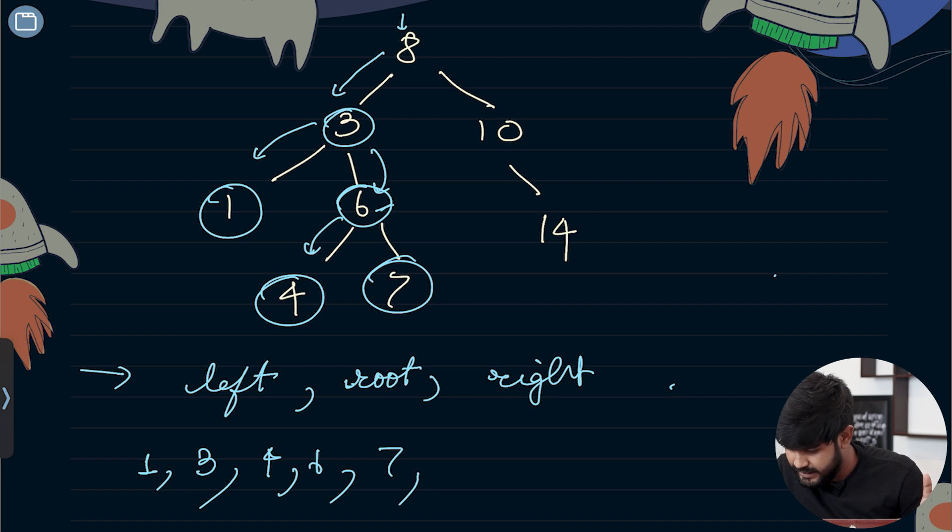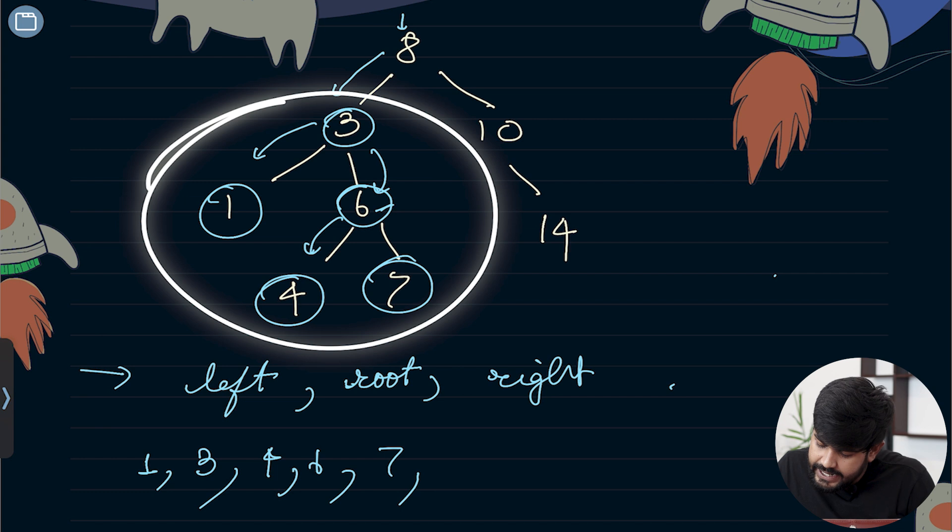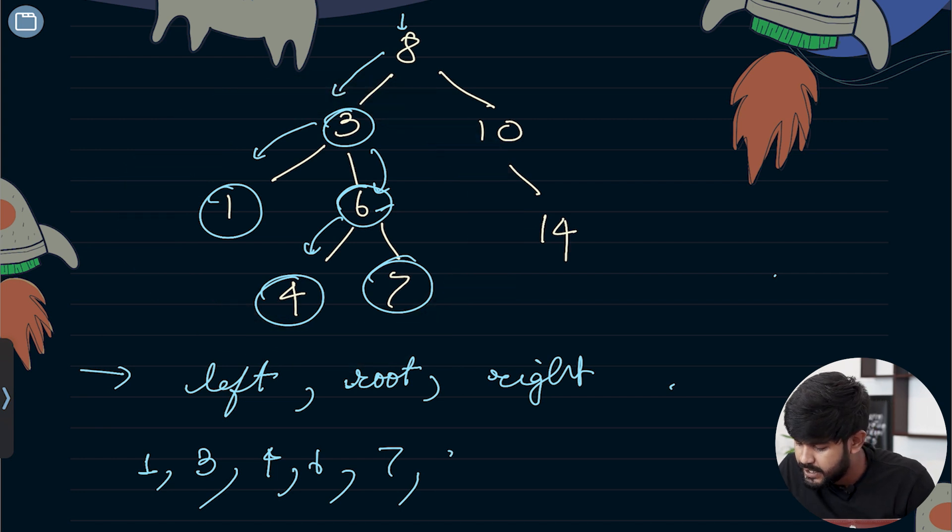7 doesn't have a left. As all the left of 8 is done, we can now visit 8. Now left and root are done, so we can visit the right side.